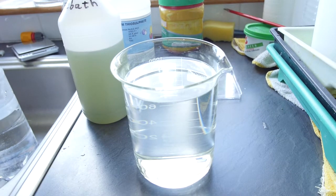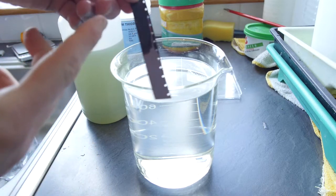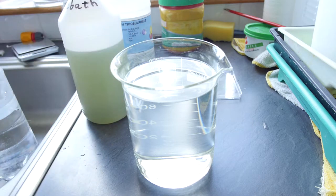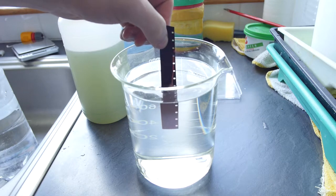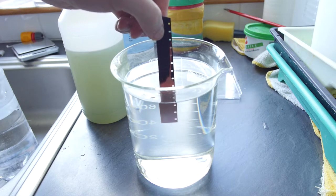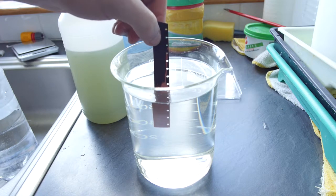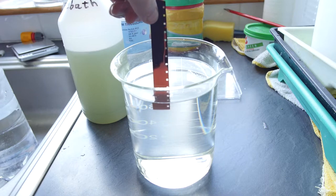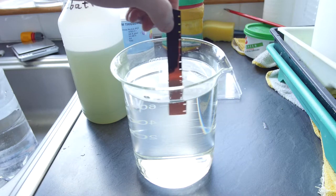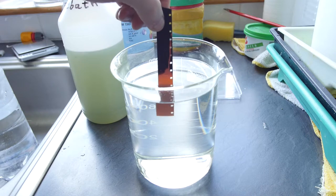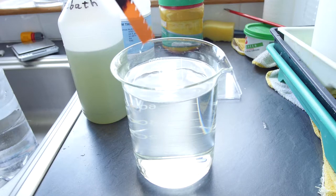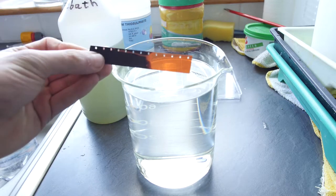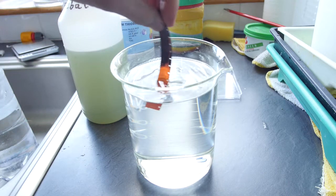To test your fixer to make sure it works, place a piece of film in it and it should turn clear. This is a piece of 16 millimeter film which I've taken the remjet off. You just dip that in and you can see it slowly turning clear. It takes about a minute. Here's the result after about a minute and a half - the piece of film has now gone clear, so the fixer is working as it should.